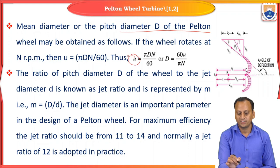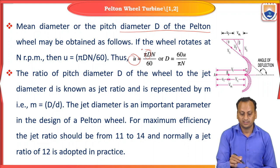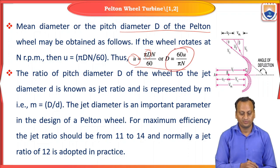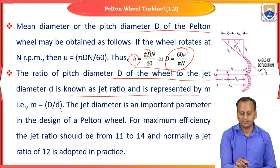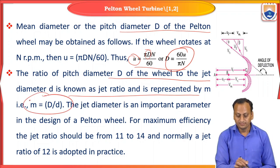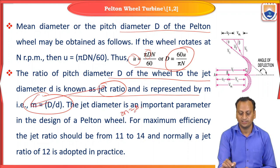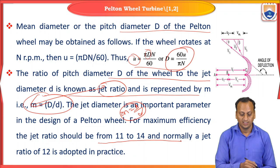The mean or pitch diameter of a Pelton wheel is obtained using blade velocity U = πDN/60, so D = 60U/(πN). The ratio of the pitch diameter D to the jet diameter d is known as the jet ratio m: m = D/d. For maximum efficiency the jet ratio should be 11 to 14; normally the jet ratio is fixed at 12.